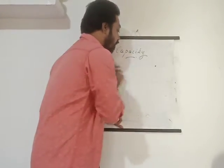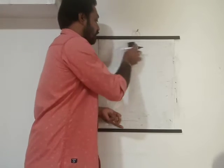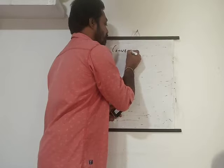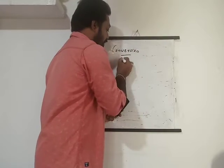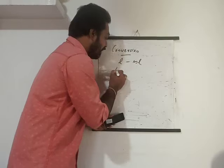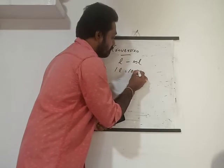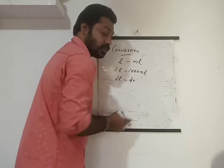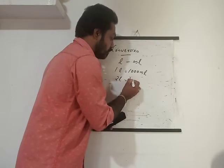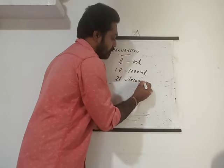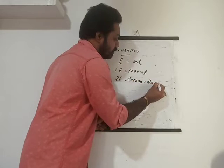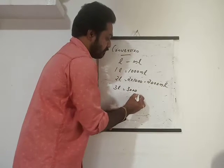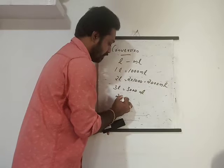Now we move on to conversions — liter to milliliter. Since one liter is one thousand ml, two liters will be two into one thousand, which equals two thousand ml. Three liters will be three thousand ml.